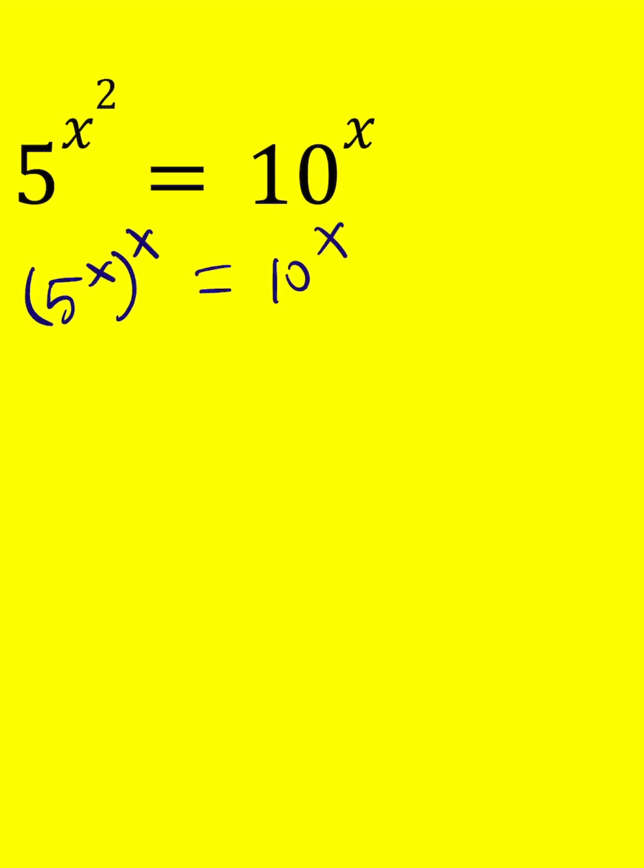Now, whenever you have a^x equals b^x, when a and b are different, you probably know that x equals 0 is a solution, right? Obviously, we can also use logs to find other solutions, but in this case, x equals 0 will do the job.